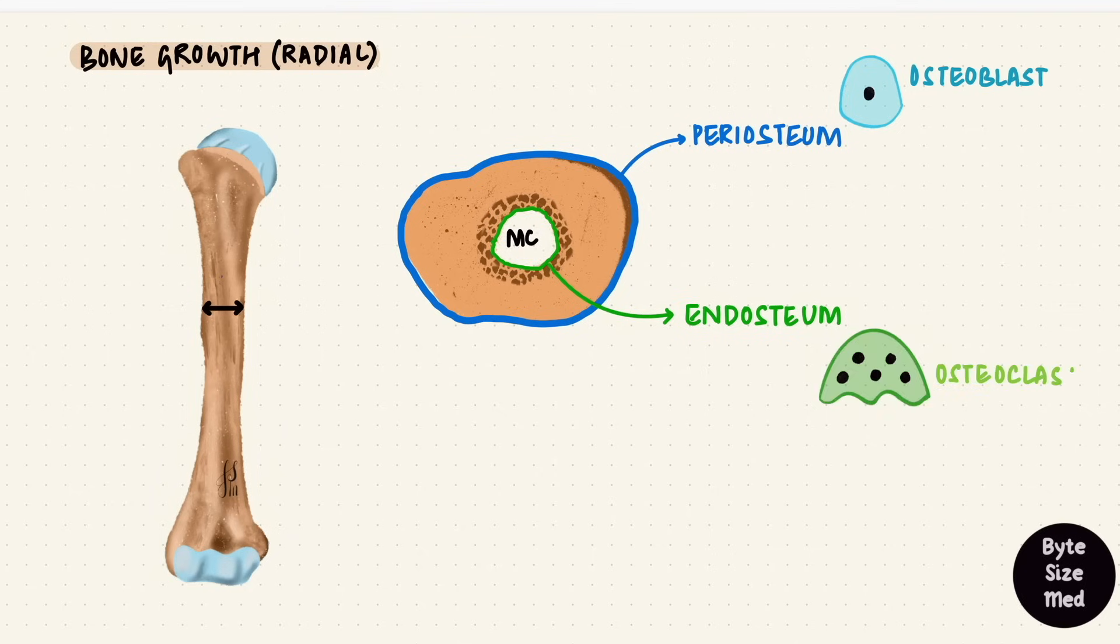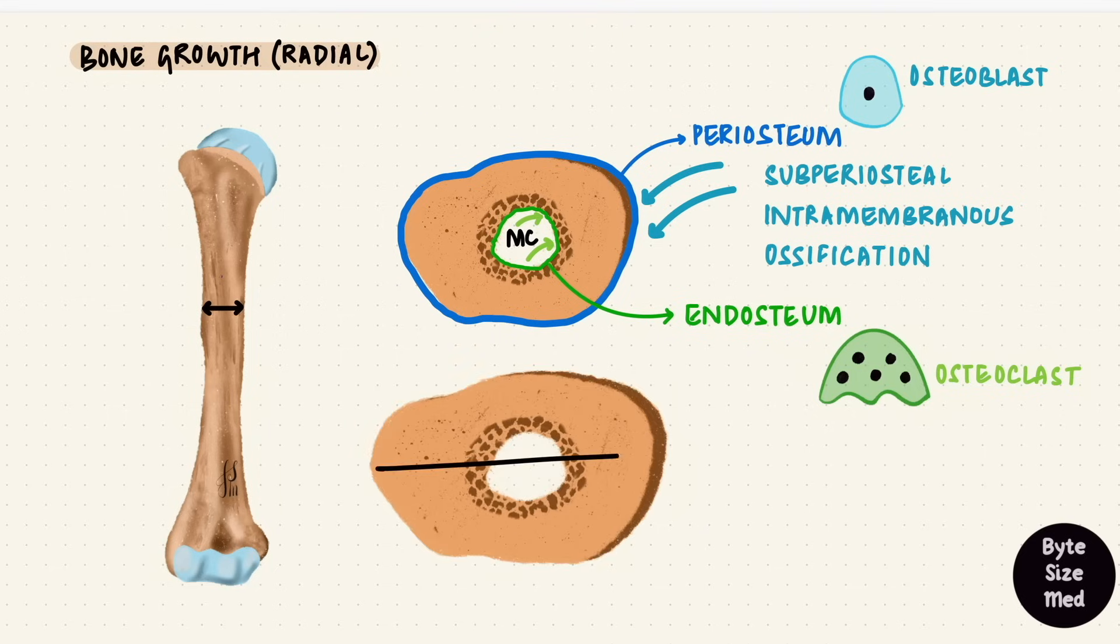The osteoblasts in the periosteum deposit bone, that's subperiosteal intramembranous ossification, while the osteoclasts in the endosteum digest bone. Both these processes balance such that bone does increase in thickness, while the medullary cavity increases in size as well.